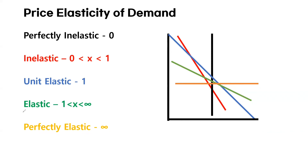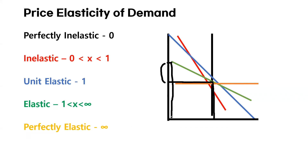The fourth type is elastic, and we say that demand is elastic if the calculated elasticity is bigger than one but smaller than infinite. Let's take a look at this green line — even a small change in price results in an enormous change in quantity.